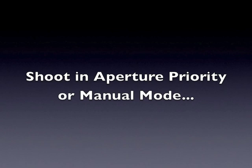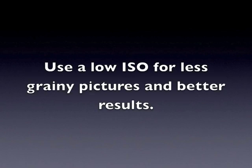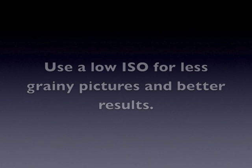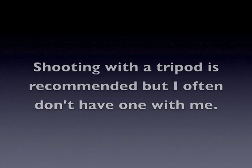You'll want to shoot in aperture priority mode or manual mode so that your aperture doesn't change while you're shooting. You'll also want to use a low ISO like ISO 100 for better results, and shoot with a tripod — it's recommended.